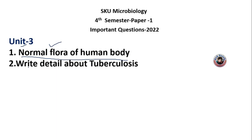The second question: write in detail about tuberculosis. For TB, you need to write about the organism, its pathogenicity, where it affects the body, its life cycle, how the pathogen causes disease, symptoms, the drugs used to treat it, and the precautions we should take. This is the standard format for writing about TB comprehensively.